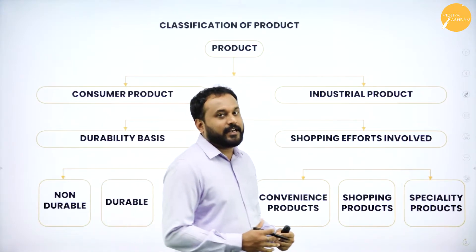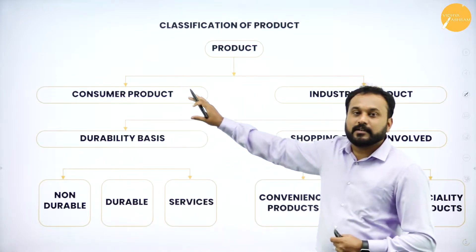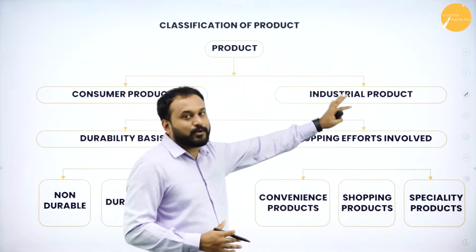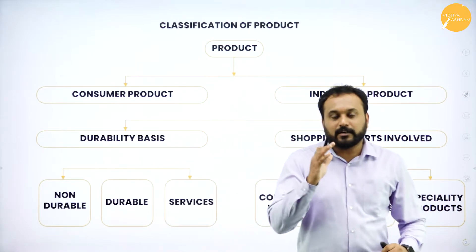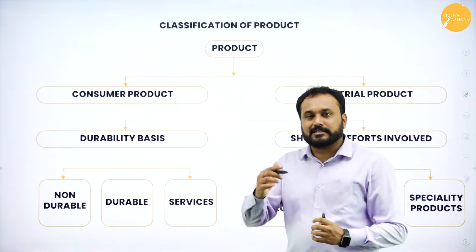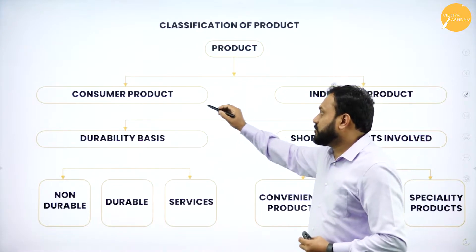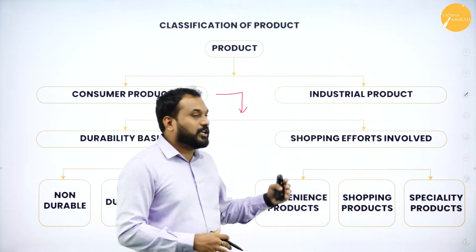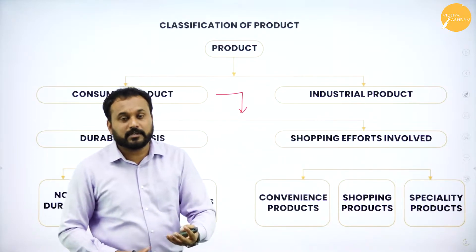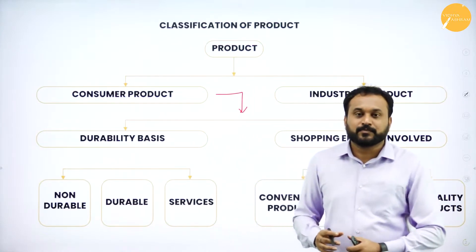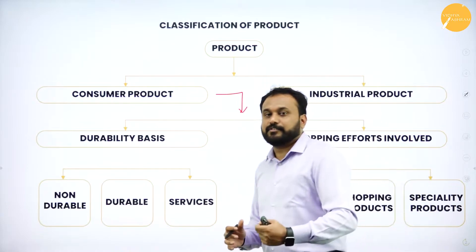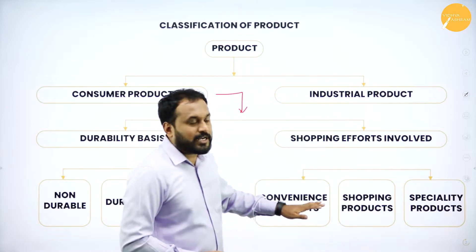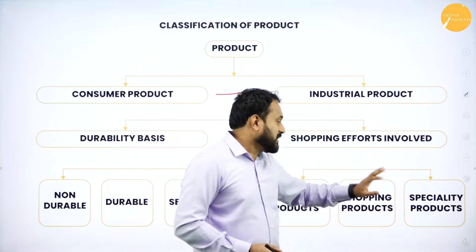Products are broadly classified into two: consumer products and industrial products. Here we are not talking about industrial products — everything we cover will be about consumer products. Consumer products are classified on two bases: one is durability, and the other is shopping effort involved. Based on shopping effort, we have three types: convenience product, shopping product, and specialty product.